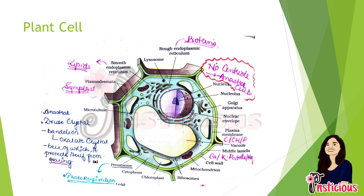Plant cells also have symplast connections, and the smooth endoplasmic reticulum is present with functions in lipid secretion. In plant cells, peroxisomes are also present, which are organized for photo-respiration.